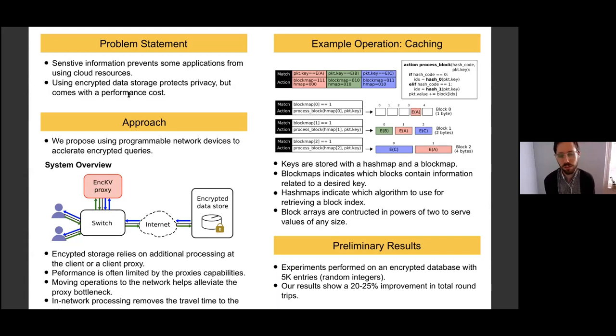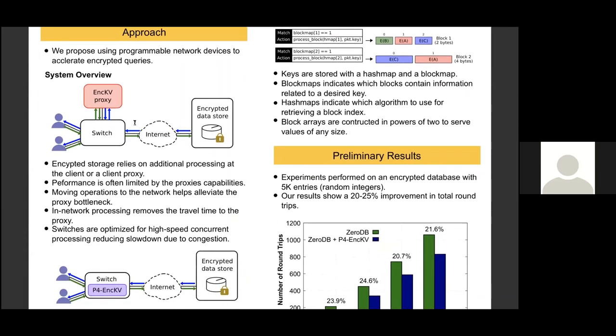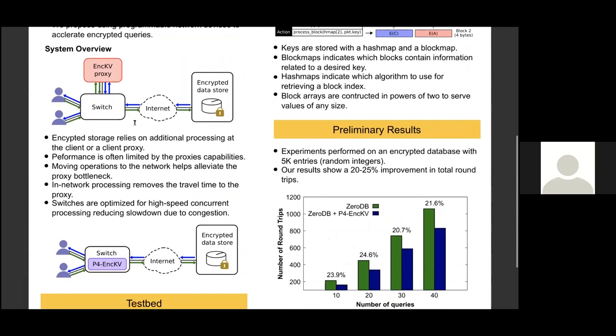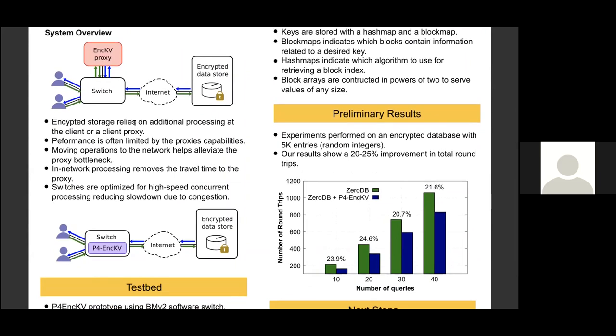These encrypted storages, the main thing they're trying to protect against is a passive observer, like an honest but curious adversary. The implementation with Mininet, is that able to deliver the performance levels where the results are interesting or relatively to some other similar proxy version?